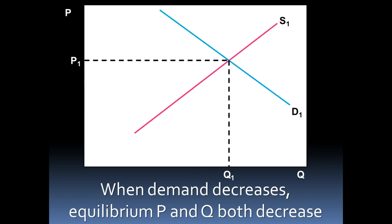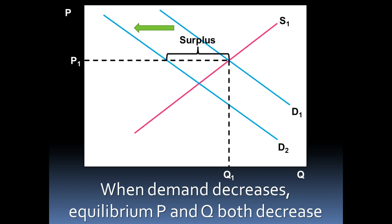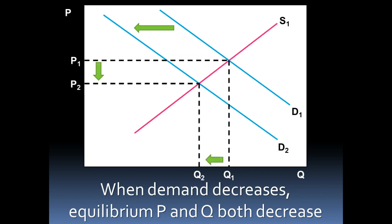If demand shifts to the left instead, the opposite story is true. At the original equilibrium price there's a surplus — more of the good is produced than is demanded. Suppliers gradually lower the price to sell their inventory until quantity demanded equals quantity supplied. Both price and quantity decrease. So changes in demand cause price and quantity to move in the same direction: increases in demand raise both, decreases in demand lower both.